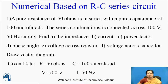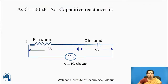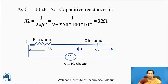So first we are going to write down the given data. Resistance is 50 ohm, capacitance is 100 microfarad, voltage is 100 volt and frequency 50 hertz. As C equals 100 microfarad, capacitive reactance Xc equals 1 by 2 pi FC, that is 1 by 2 pi into 50 into 100 into 10 raised to minus 6. So after calculating, Xc equals 32 ohms.